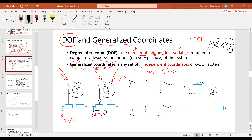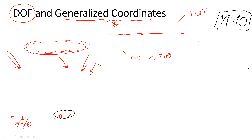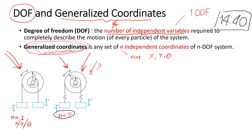Let me share the screen. Do you have any idea how many degrees of freedom the second example has? We begin with the coordinates that we think can describe the motion of each component in the system. We have the X coordinate that describes the position of mass M1, the Y coordinate that describes the position of mass M2, and theta that describes the rotation of the pulley.